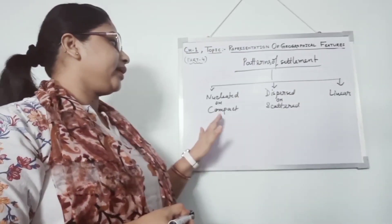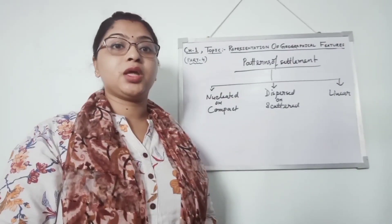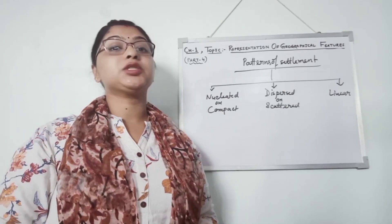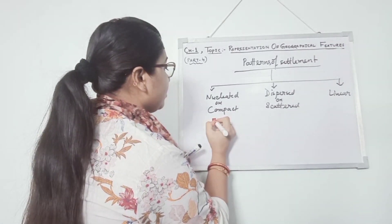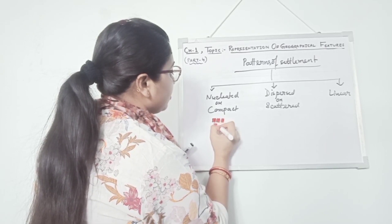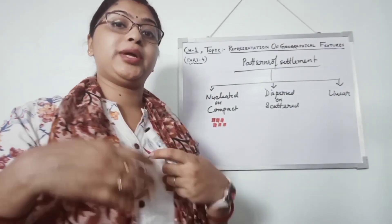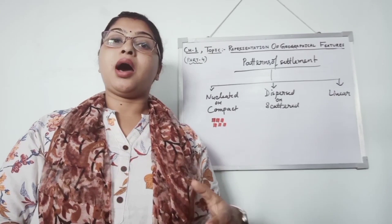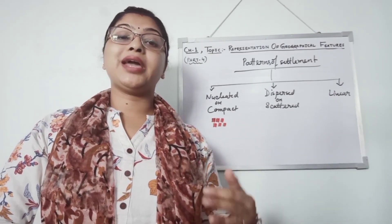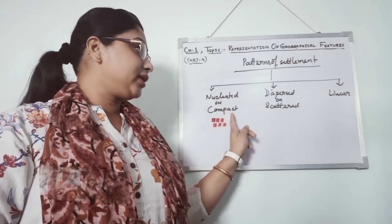Now I will tell about this. Nucleated or compact. Where basically the population or the people or houses live close to each other. That is known as compact or nucleated. You will get to see here this kind of settlements in the topographical map near to the junction point of any transportation, like railway, like roads and even sometime near to some banks or commercial areas to get facilities. So this is nucleated or compact.